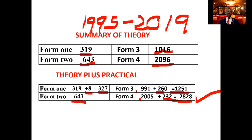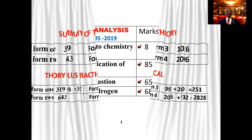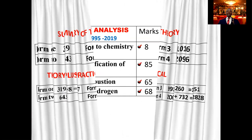All the physical chemistry topics — rate, radioactivity, electrochemistry, and energy changes — are all in Form 4. From those particular topics, you will find at least two or three questions in paper two, which is around 40 marks. And there is at least one question in the practical as well. Let us now look at those analyses and how we arrive at the breakdown per topic.